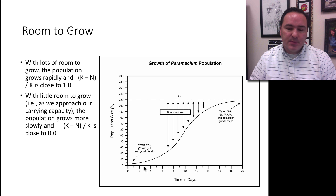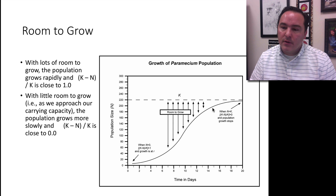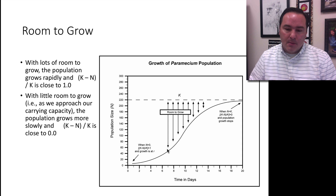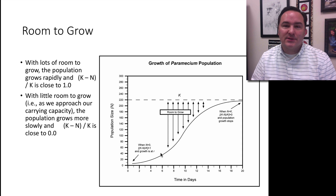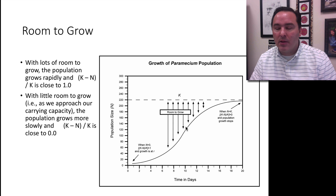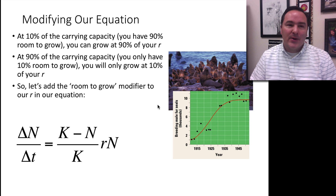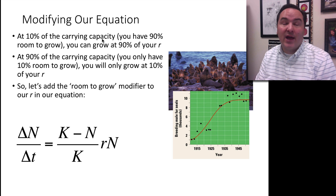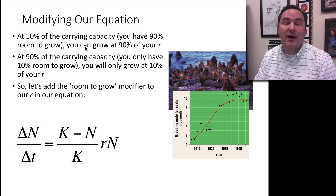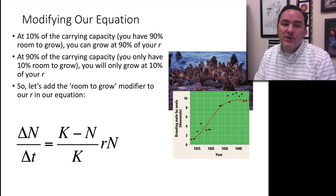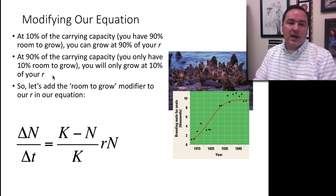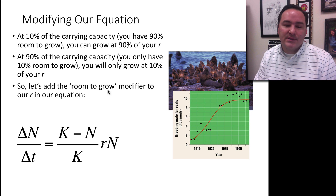When we are down at the low part of the curve, we have lots of room to grow. When we're near the top of the curve, we don't have a lot of room to grow. But when we're down low, we also don't have a lot of population, so growth is slower. As we move along the curve and the population increases, we have more population with room to grow, so we can grow fairly quickly. At 10% of carrying capacity, you have 90% room to grow, so you can grow at 90% of your rate. At 90% of carrying capacity, you only have 10% room to grow, so you're only growing at 10% of your R.